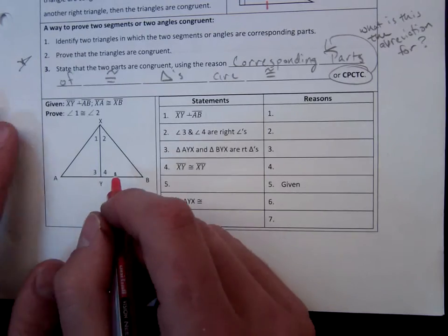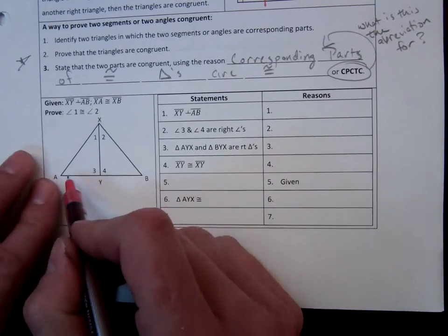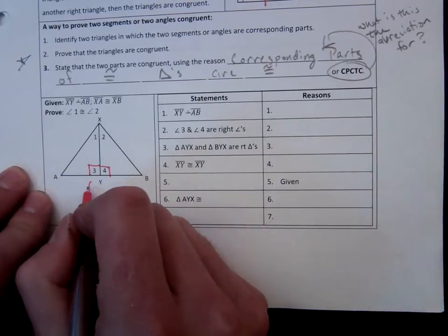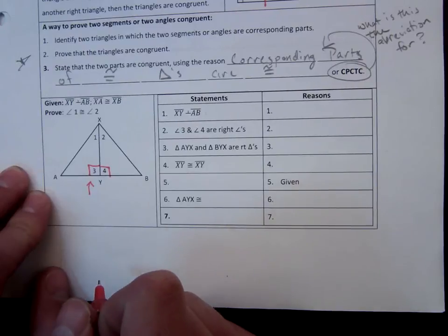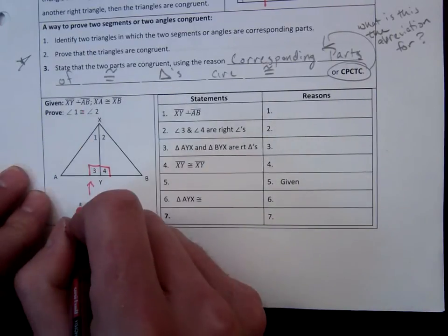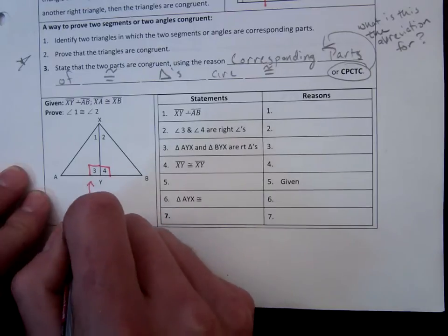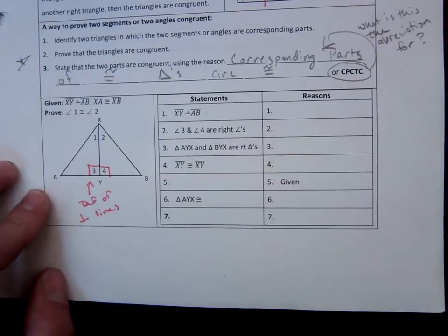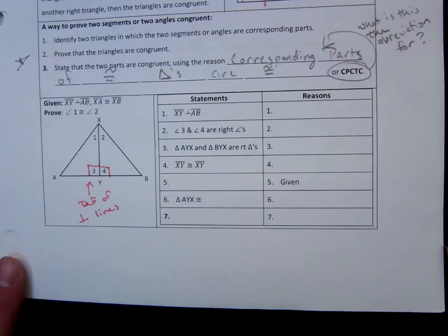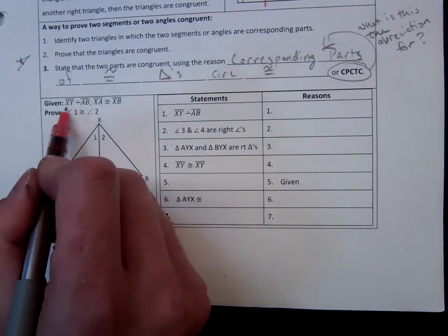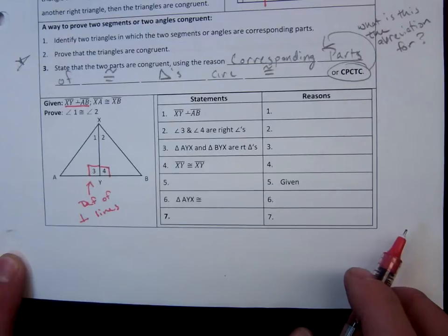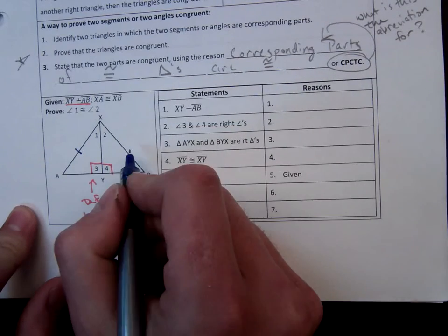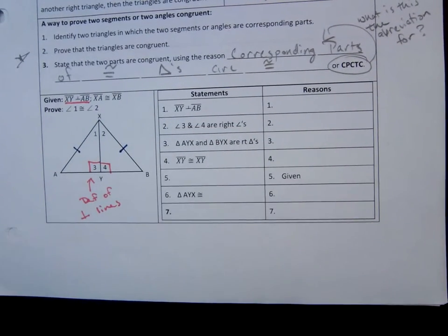Now, that tells me that XY and AB will form two right angles here and here. Now, just because they're perpendicular, that's not actually enough to quite say that. So the perpendicular statement is going to be given, but the right angle part is from the definition of perpendicular lines. So we need to make that statement as it is not explicitly stated in our problem. Now, the next piece of information that they give us is that XA is congruent to XB.